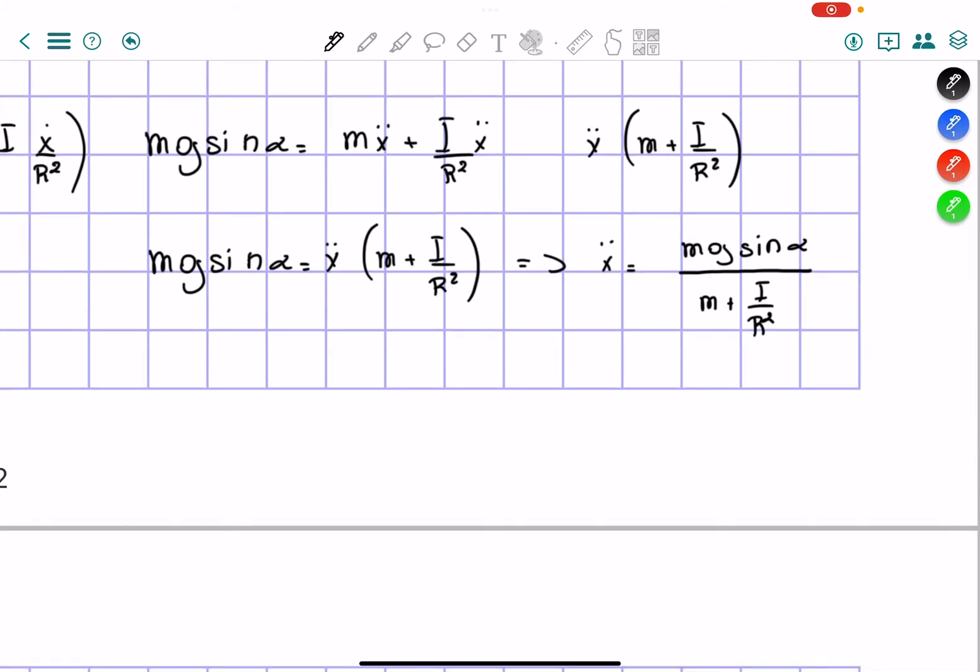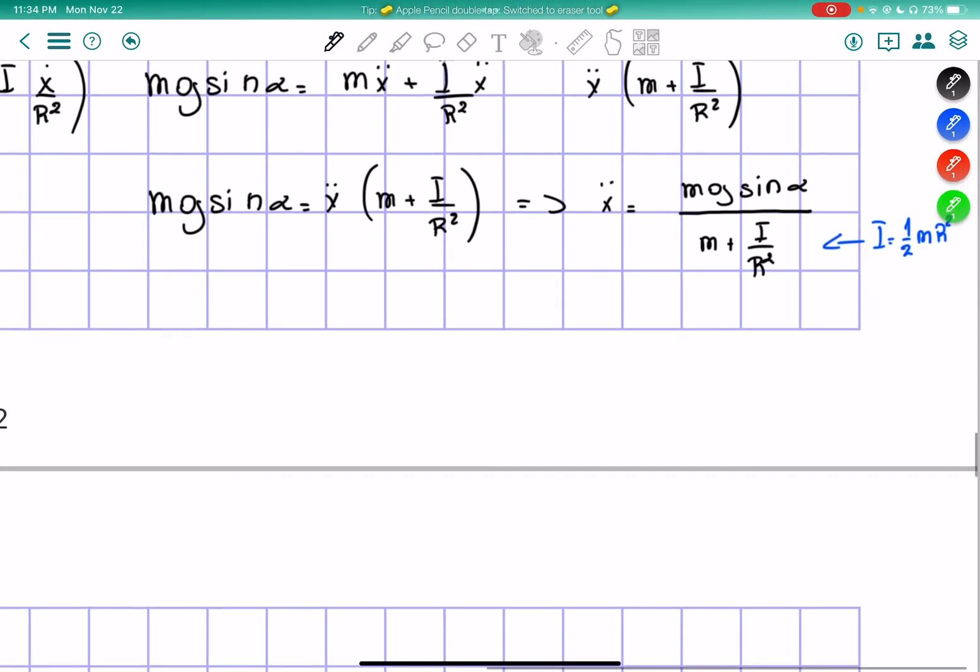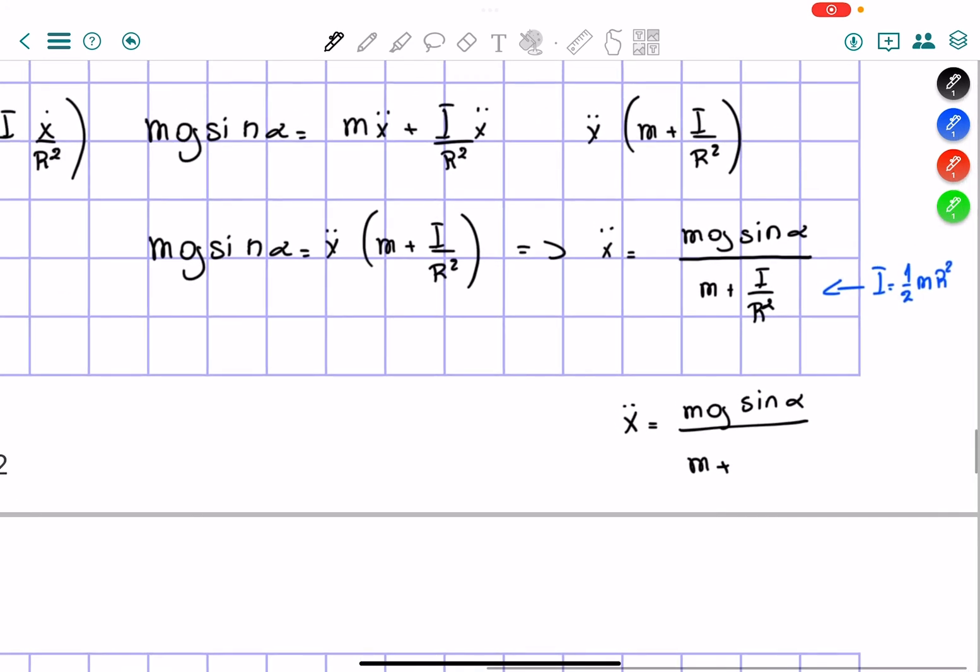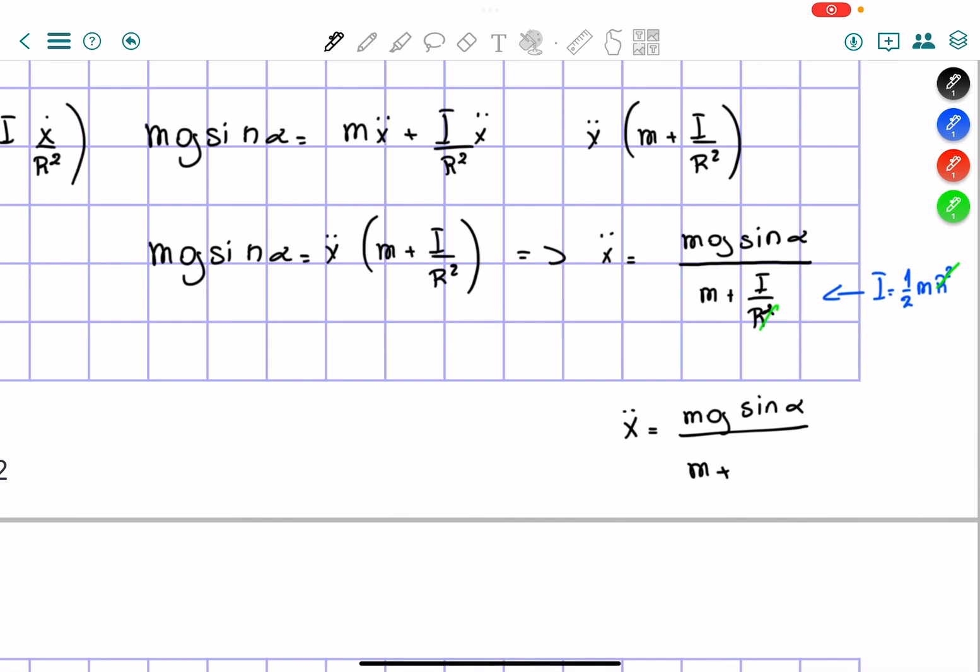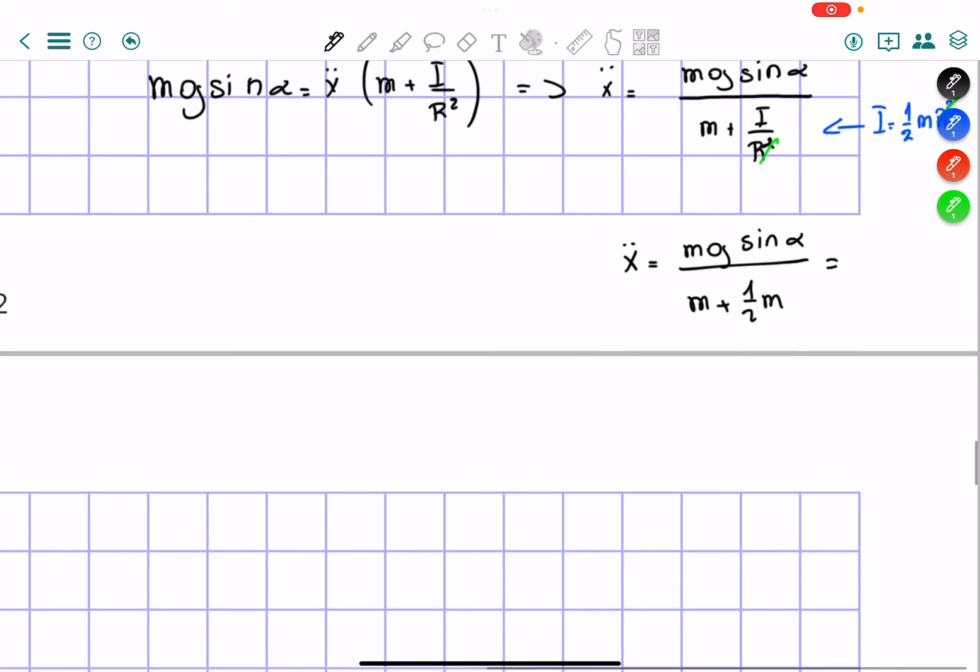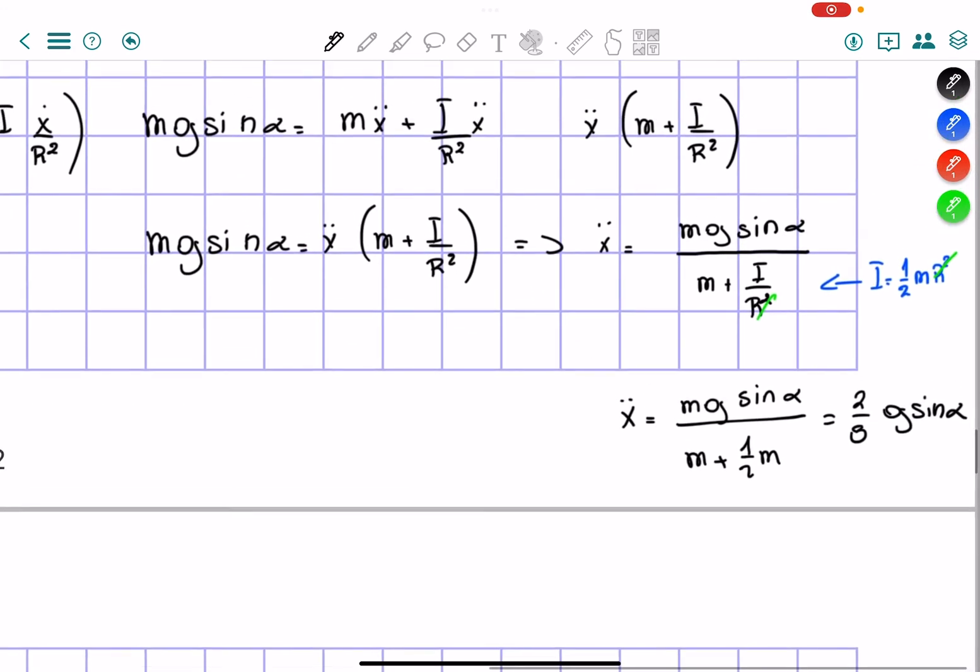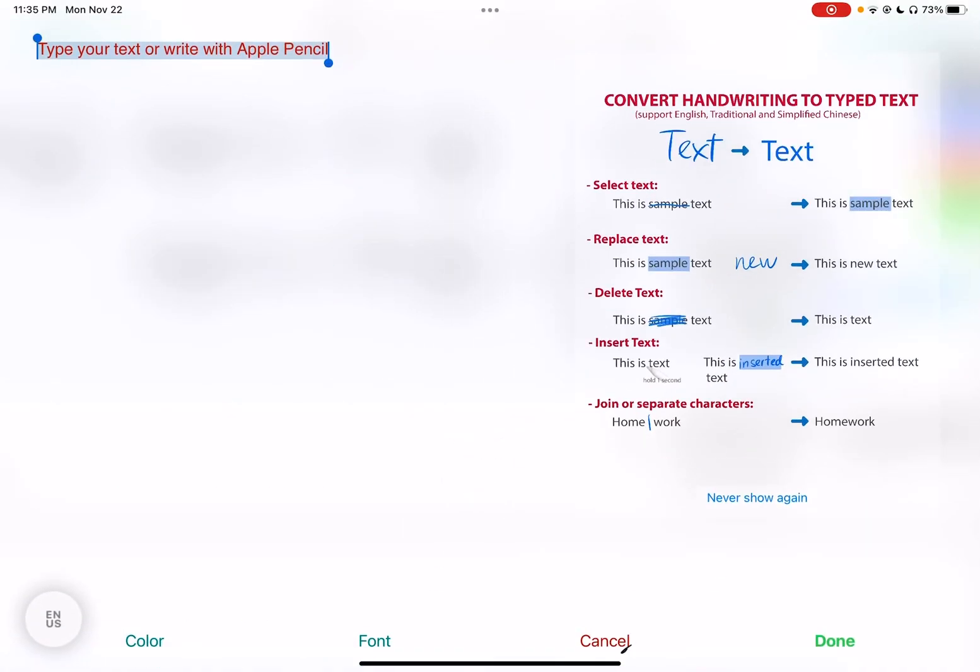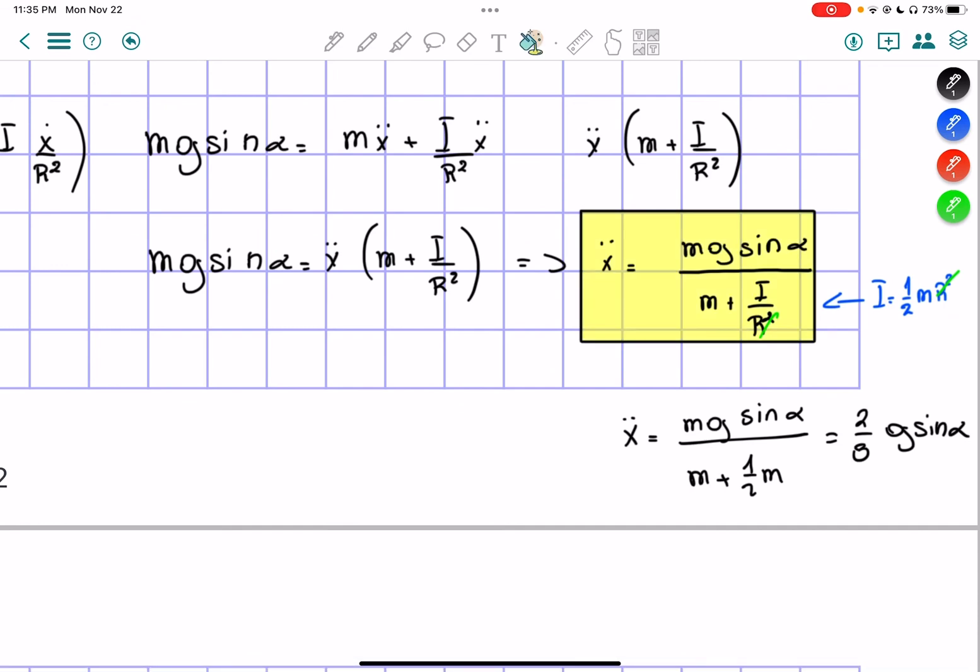Now if we're given, for example, that I is a solid cylinder, we know that I would equal 1/2 m R squared. So if we were to plug it in just for a solid cylinder, we would get it equals mg sine alpha over m plus, we would cancel the R squared terms, we would get plus 1/2 m. And so we would get in the end that this equals 2/3 g sine alpha. This is just for a solid cylinder. The previous one is the most general solution to our equation. Thank you very much.